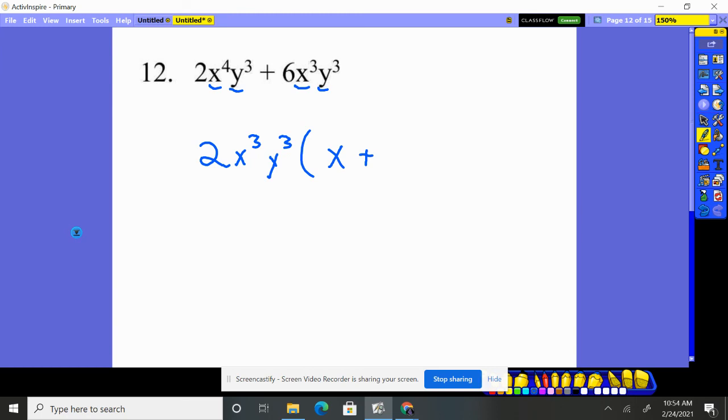Now, two times what gives you the six? A three was left behind. You factored out all of the X to the third. You factored out all of the Y to the third. So there's none left. So that's what we have.